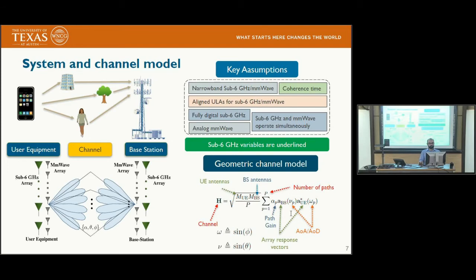For the system and channel model, we assume that sub-6 GHz and mmWave systems both have uniform linear arrays. The sub-6 GHz system has an RF chain per antenna, so it is a fully digital system, while the mmWave system has only one RF chain, giving it an analog architecture. Both systems operate with narrowband, and we assume the channel coherence time is long enough to fetch information from sub-6 GHz and use it in mmWave link configuration. The channel is written using the geometric channel model incorporating the number of antennas at the UE and base station, the number of paths, path gain alpha, array response vectors A_BS and A_UE, and the angle of arrival nu and angle of departure omega.